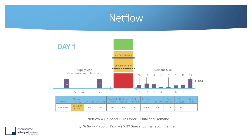Because the net flow position is in the yellow zone, the procurement team should launch a procurement order. How many? 60 units — to push the net flow position from its current position to the top of green on day eight. That will allow us to absorb the spikes on day eight. And since we have a lead time of seven days, if we order today, the 60 items will arrive in time to answer the demand on day eight.